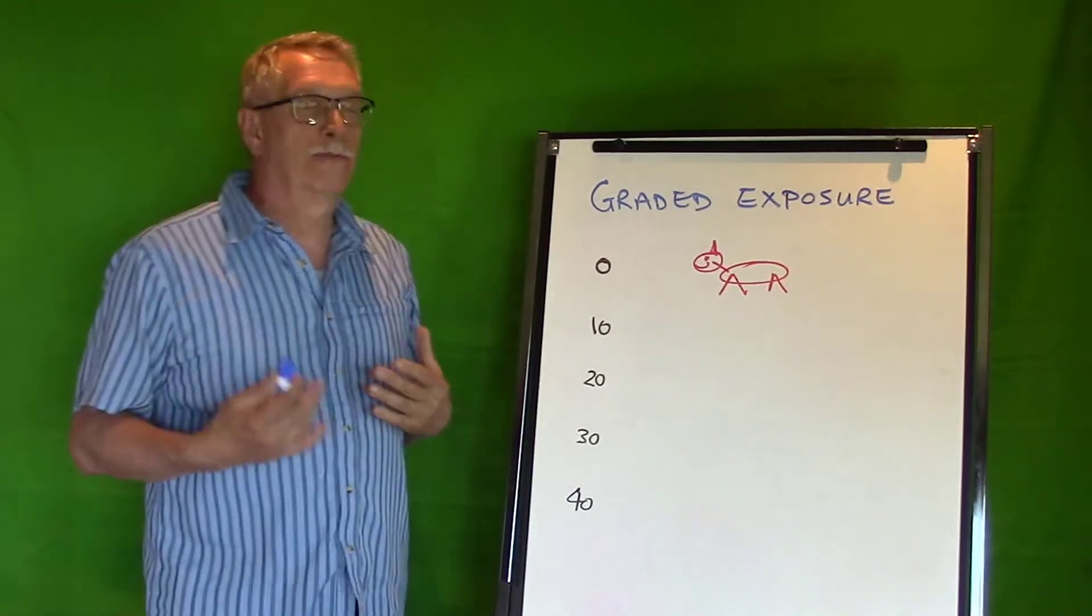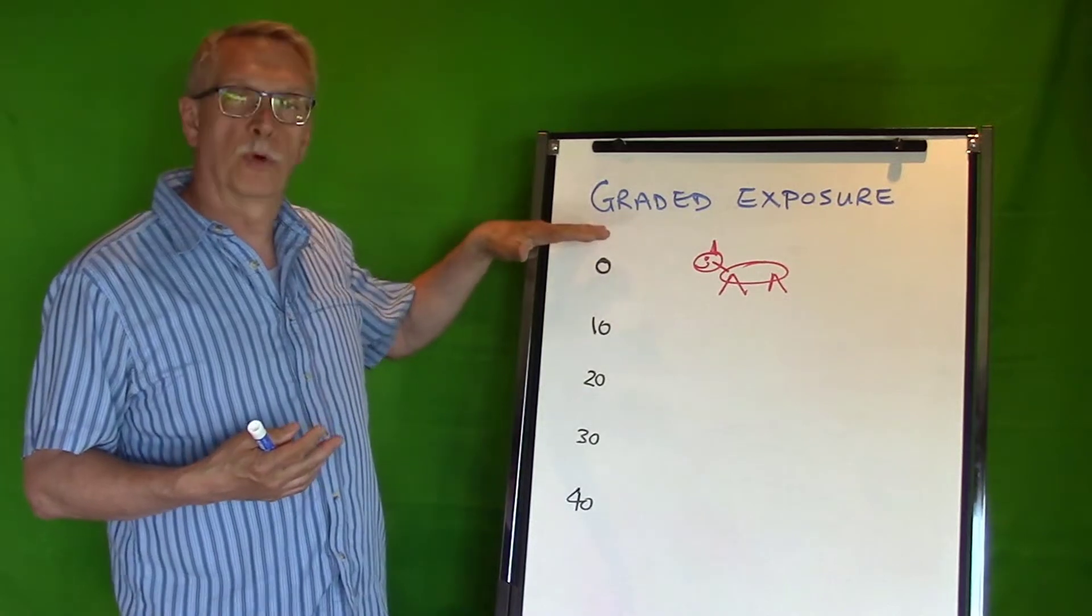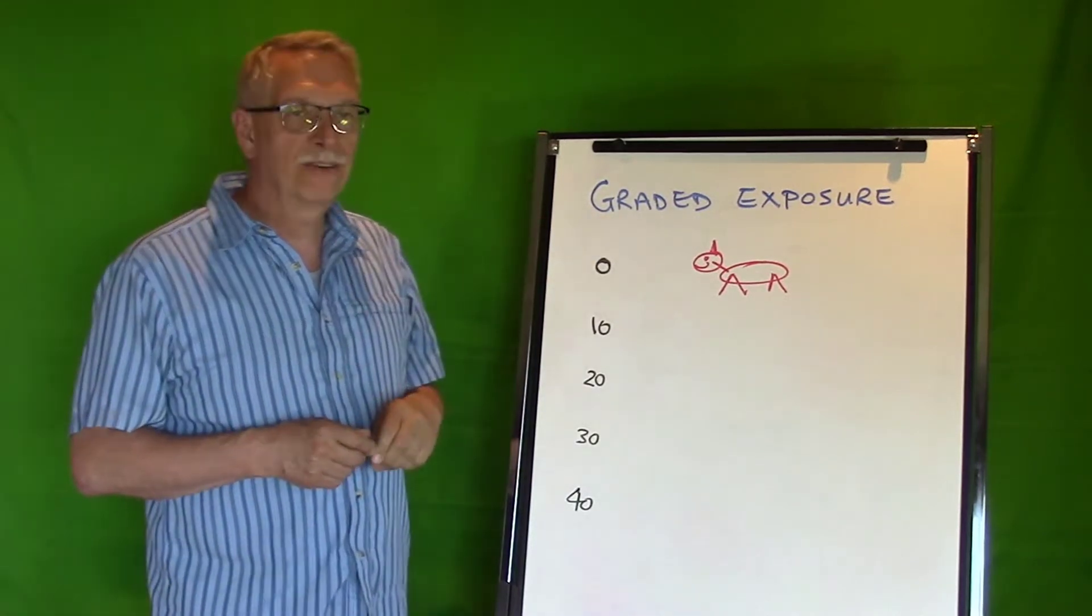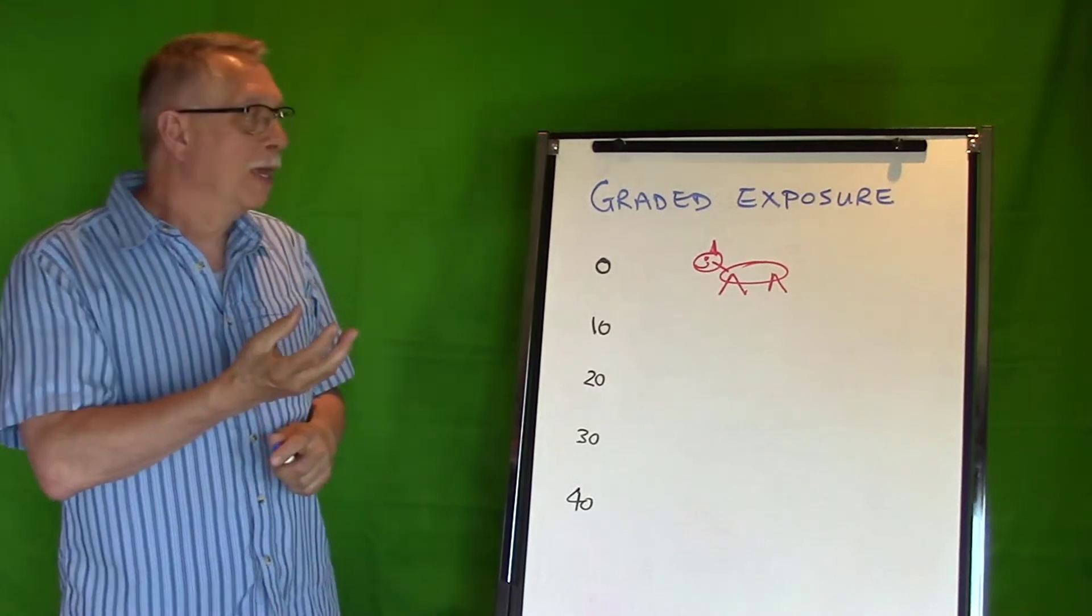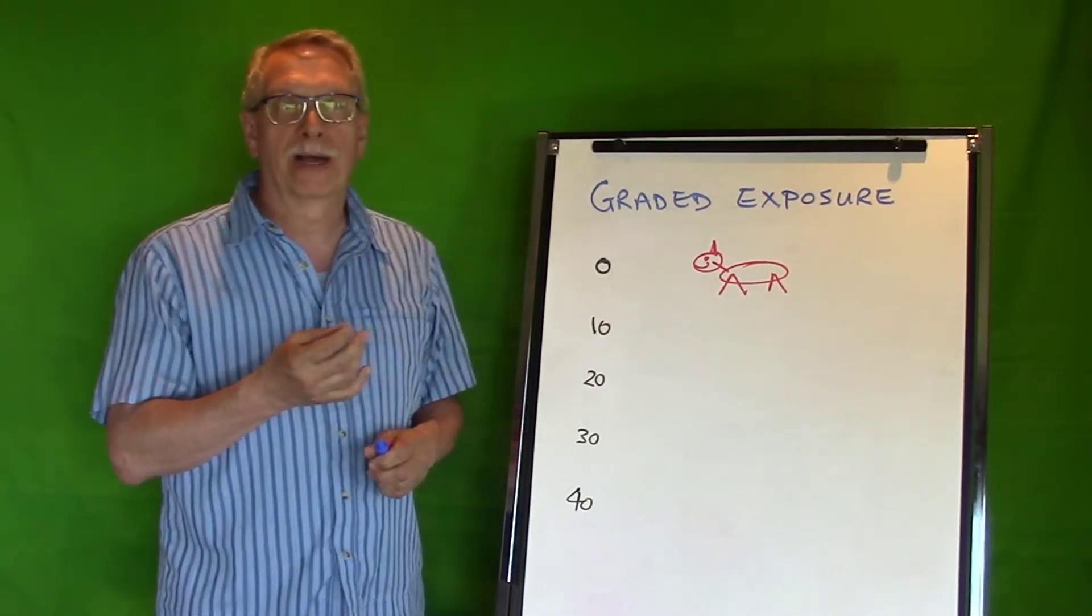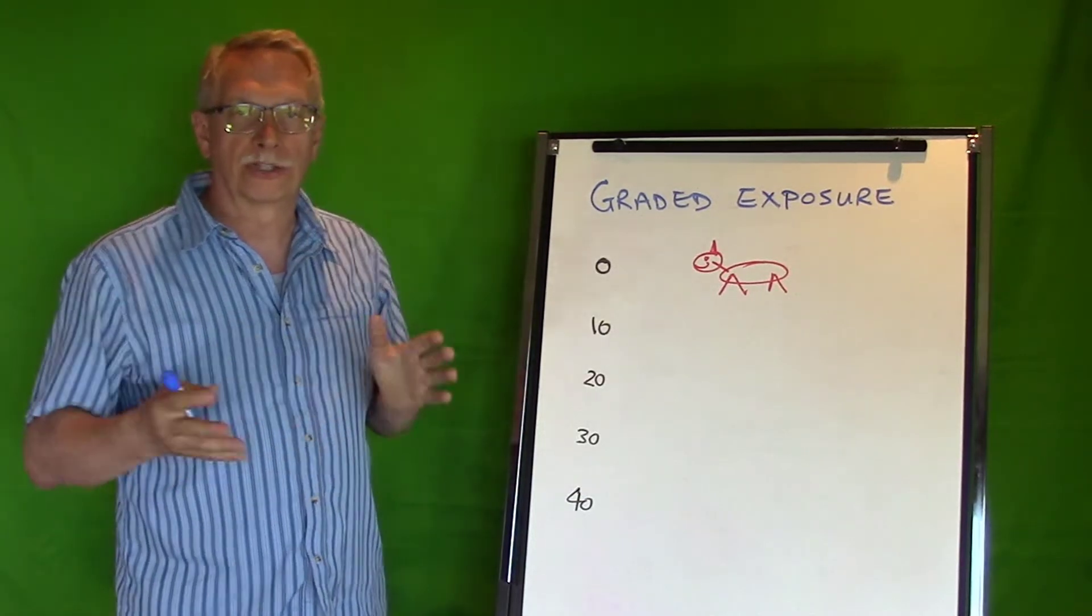When we're trying to modify behavior in dogs, something we use a lot is called graded exposure. It's a method to desensitize a dog to a trigger by reducing the volume on the trigger enough so the dog doesn't react.